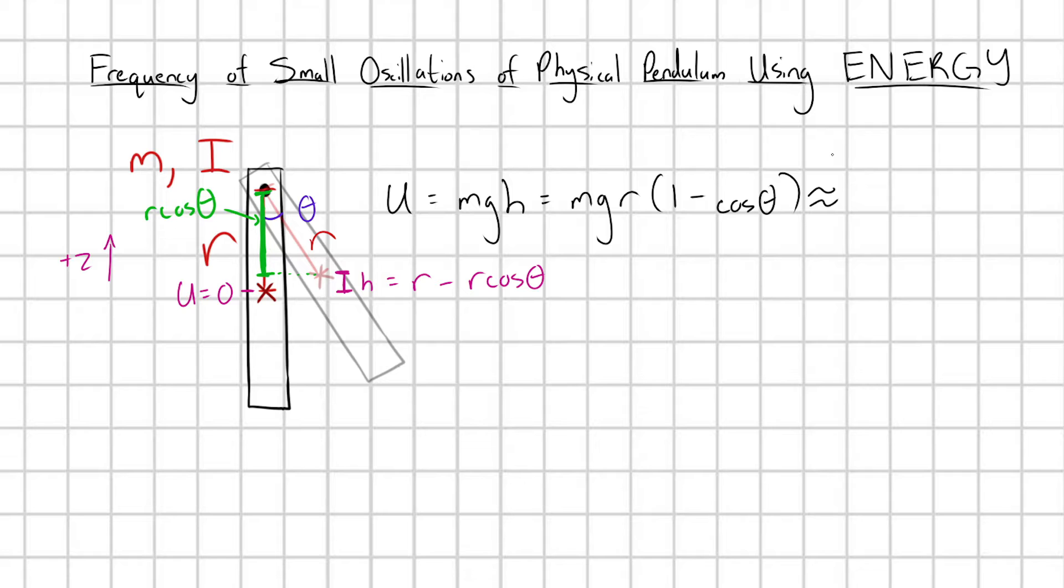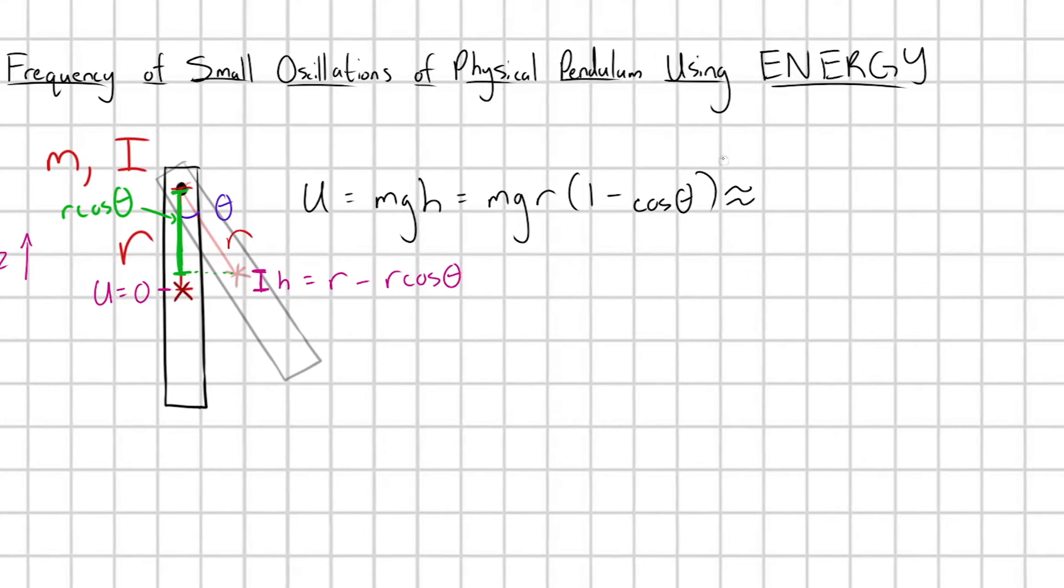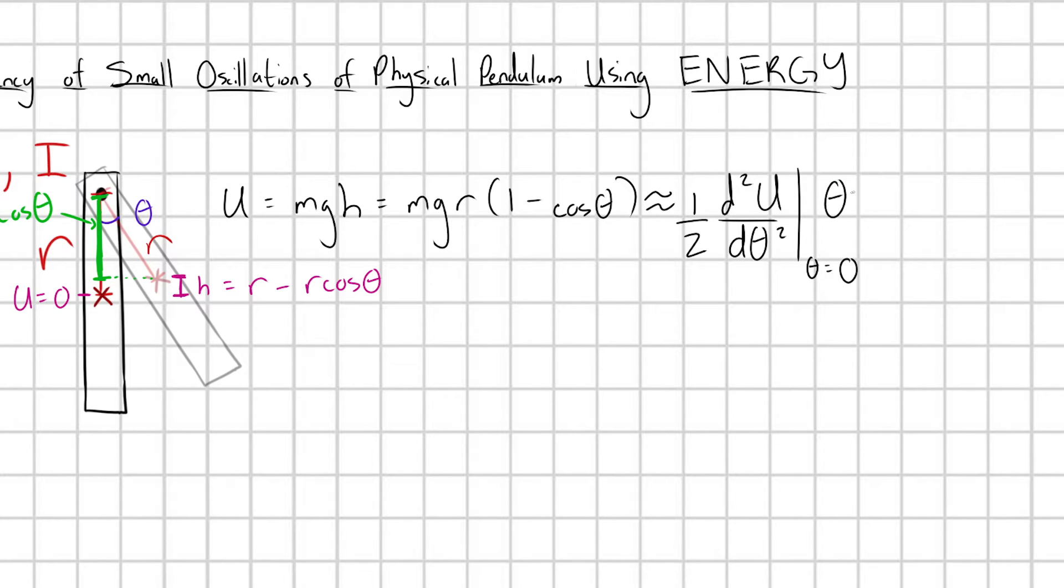So we're just looking for the quadratic term of this Taylor series. So that's going to look like one half, and you take the second derivative of your potential energy function with respect to theta, evaluate that at the equilibrium location. That's going to be theta is equal to zero, that equilibrium spot where this is just pointing straight down, theta is equal to zero, times theta squared. Again, for a more general Taylor series, this could be theta minus theta naught squared, where theta naught would be the equilibrium angle. But of course, theta naught is just equal to zero. So now I need to get these two derivatives here.